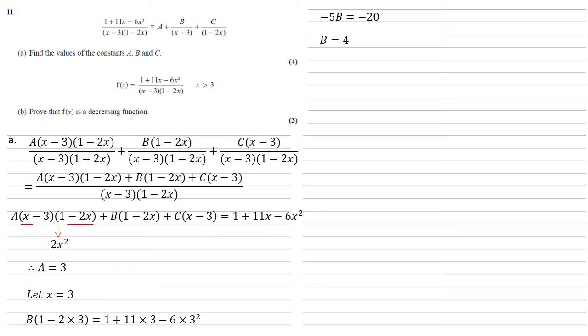To find c we're going to do a similar thing, but this time we're going to set the (1 - 2x) bracket equal to 0 by letting x equal a half. Again, the (1 - 2x) brackets will disappear, we'll just be left with c(1/2 - 3) = 1 + 11×(1/2) - 6×(1/2)². So -5/2 × c = 5, therefore c is equal to -2. So we've got a = 3, b = 4, and c = -2.